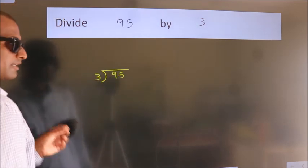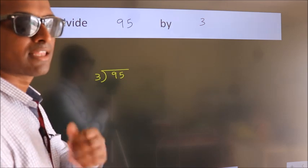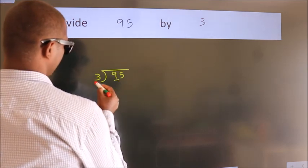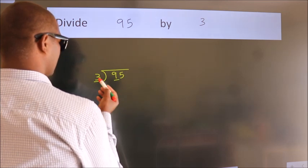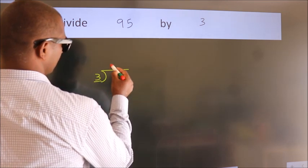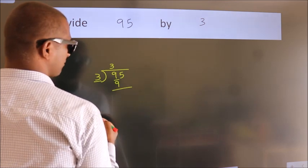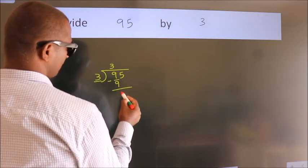This is your step 1. Next, here we have 9, here 3. When do we get 9? In 3 table. 3 threes, 9. Now, we should subtract. We get 0.